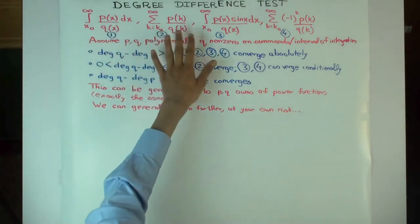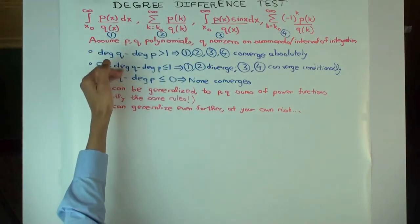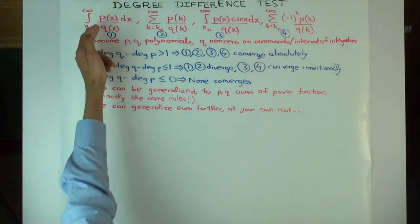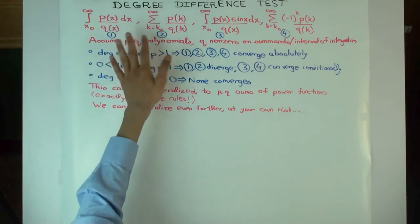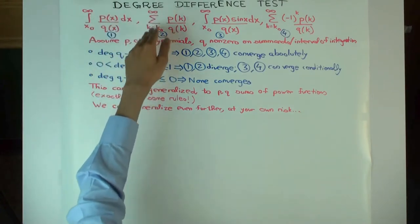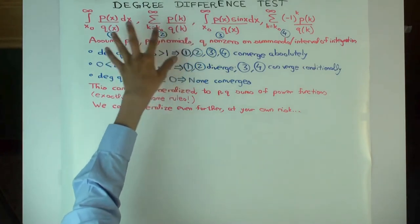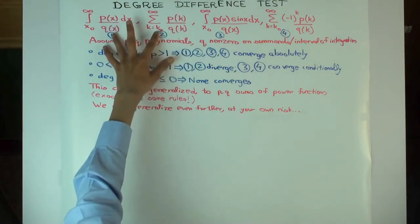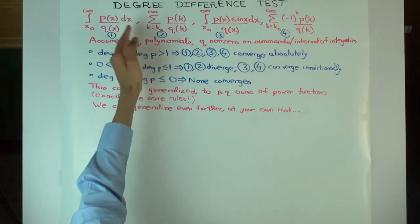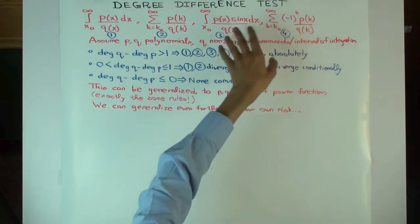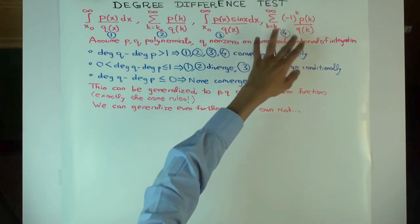Up here we have the rules for rational functions, p and q are polynomials and we are looking at integrals and summations where we are not bothered about the denominator becoming zero because we adjust the summations accordingly. And these two are unsigned, there is no sign alternation, when you are large enough the signs are uniform. These two are sort of oscillating sign versions.